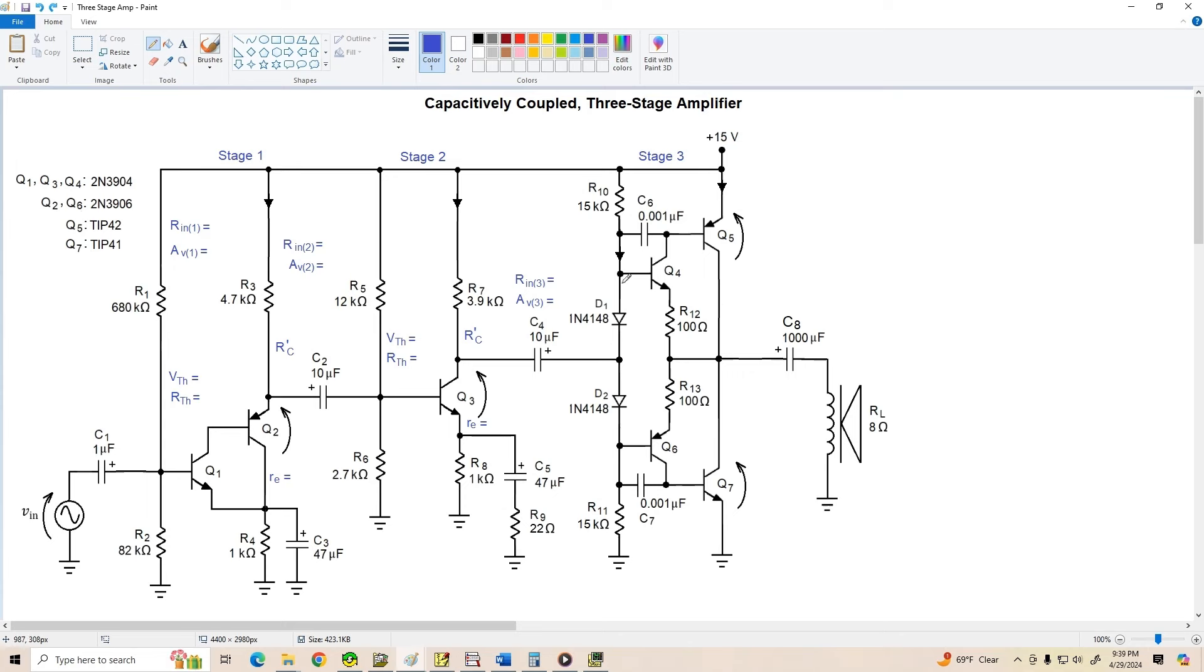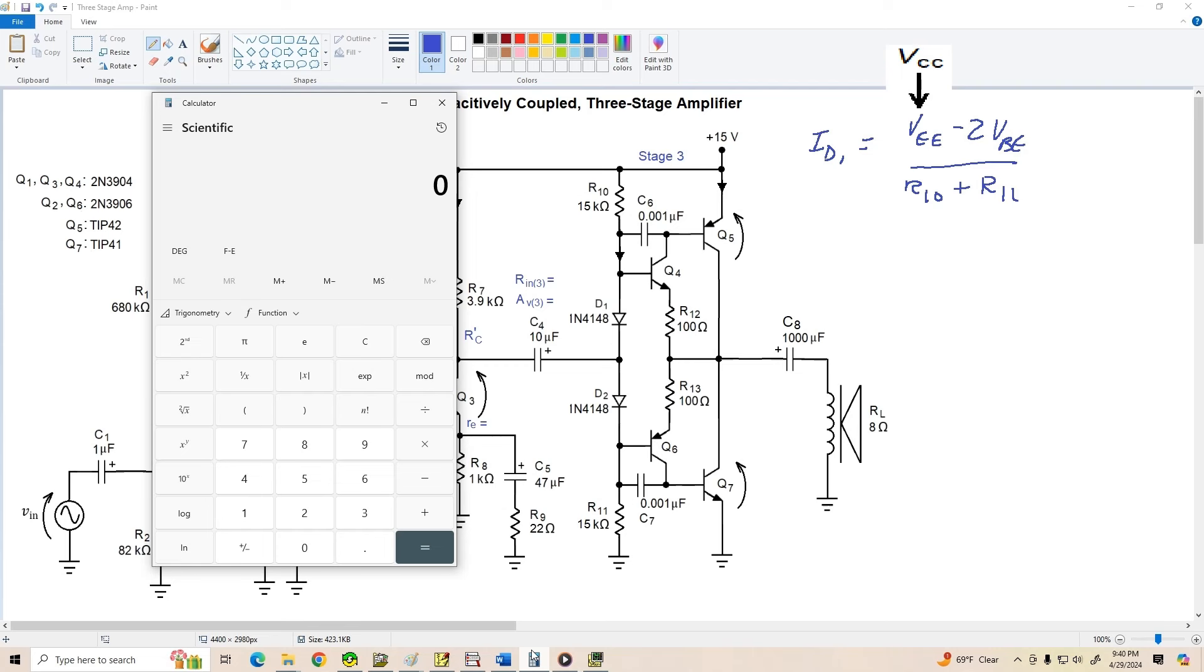With all this in mind, let's start our analysis here on stage 3. And what I'm going to do first is determine the current that's flowing down through the biasing network, R10, D1, D2, and R11. That would be given by I sub D1, and that's VEE minus 2 VBEs for these diodes, divided by R10 plus R11. Let's pull up our calculator and see what we've got. So we've got 15 minus 1.4, that's the two diode drops, divided by 15K and 15K is 30K. And that gives us about 453, let's just call it 450 microamps down through this side of the circuit.